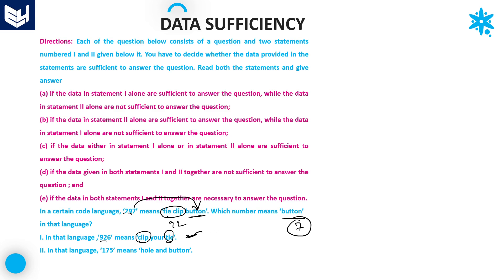You are getting the answer by using statement 1 alone. Now taking statement 2 alone: only 7 is common between statement 2 and the question, and the common word is 'button'. Therefore button equals 7. From statement 1 alone you get the answer, and from statement 2 alone you also get the answer. Therefore, either statement 1 alone or statement 2 alone is sufficient to get the answer. Option C is the right answer.